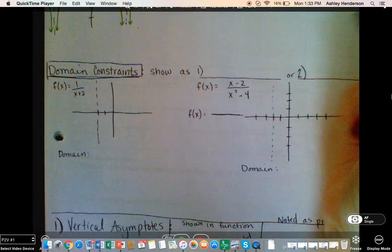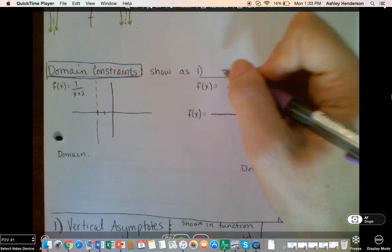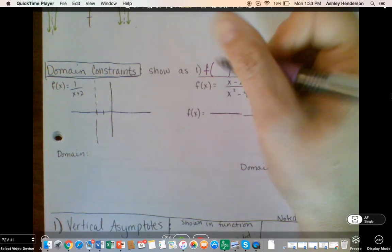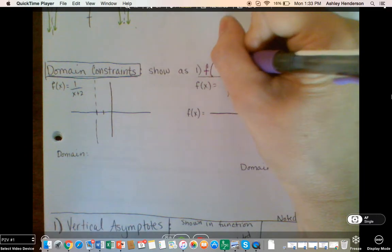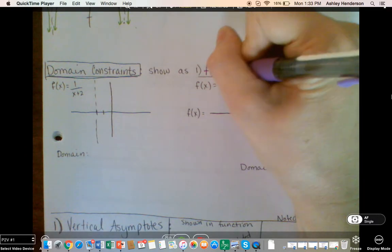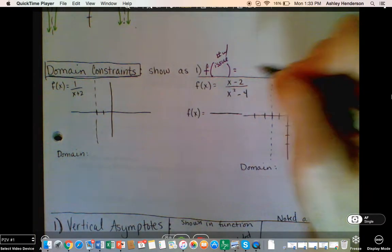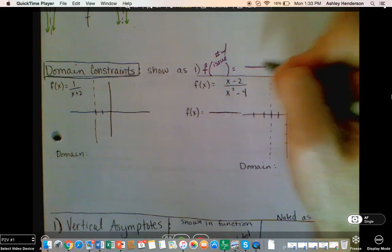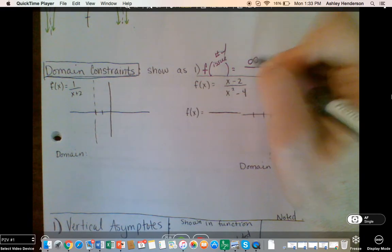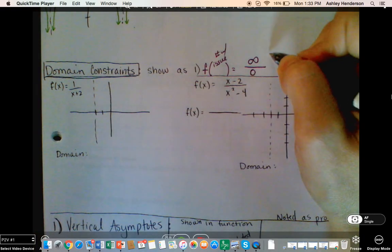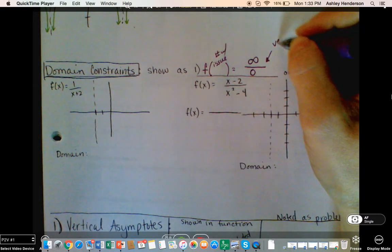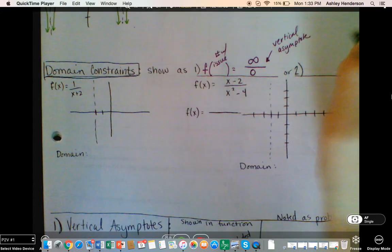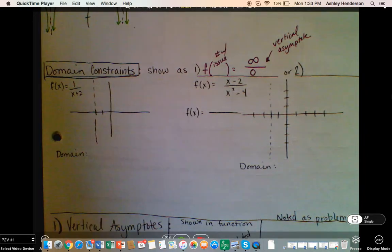If I know what the value of x is that causes the domain restriction, so if I plug in f of the issue number, whatever the number is associated with the issue, so the number with issues, when I plug that in, I'm going to get one of two things. I'm either going to get infinity over 0 and this is indicative of a vertical asymptote.